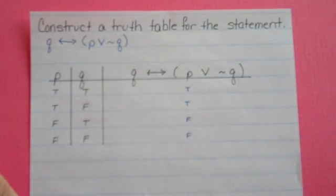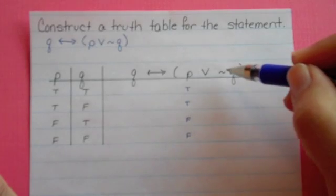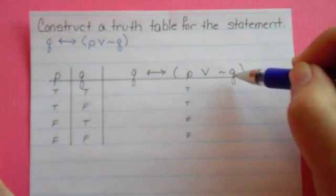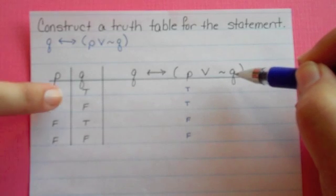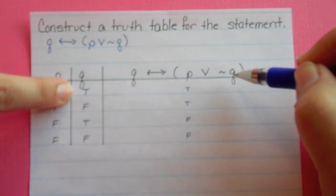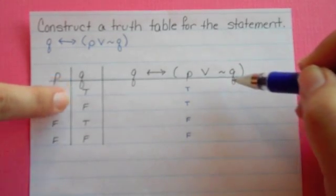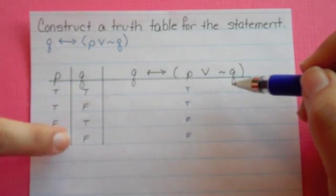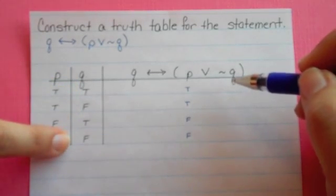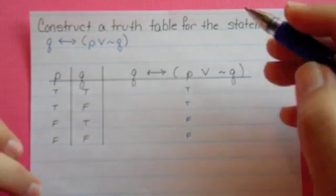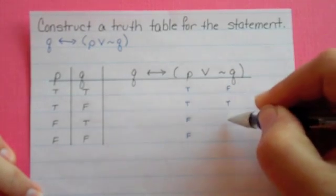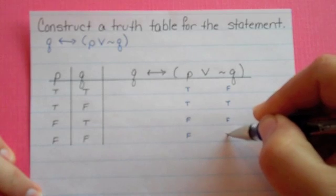The next thing I'm going to look at in my parentheses is NOT Q. NOT Q says to take Q and take its opposite. So Q was true, false, true, false — so NOT Q is going to be false, true, false, true.